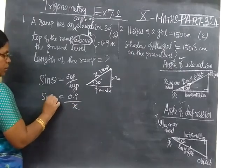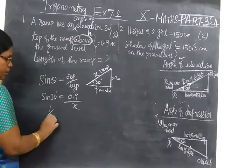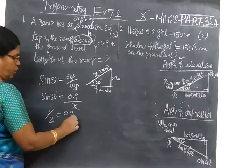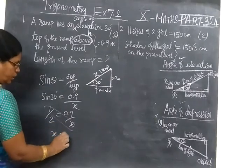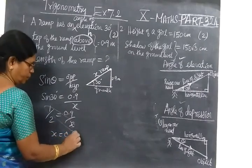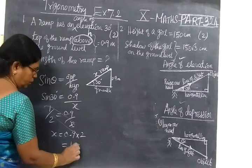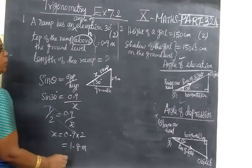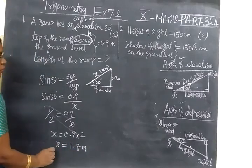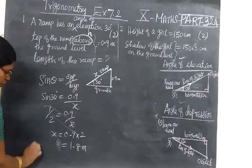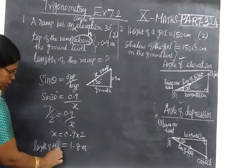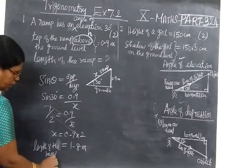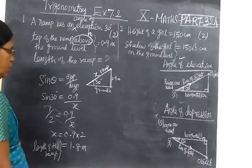Now sine - for theta you are writing 30. Sine 30. So 0.9 by x. You cross multiply. So x equals 0.9 into 2 equals 1.9 meter. It is given in meter. That means x means you write length of the ramp.